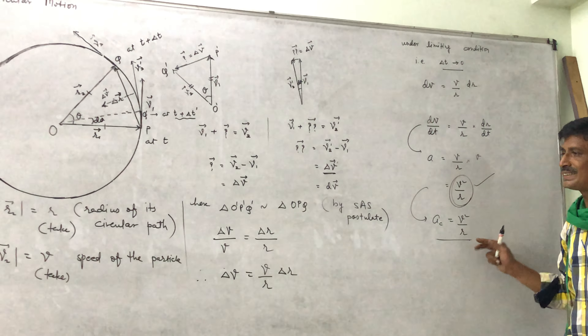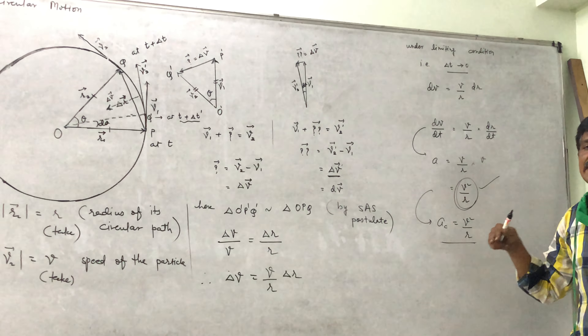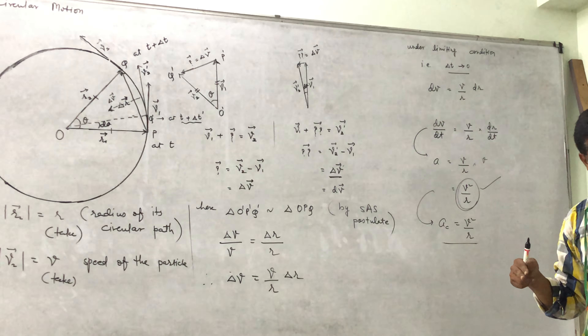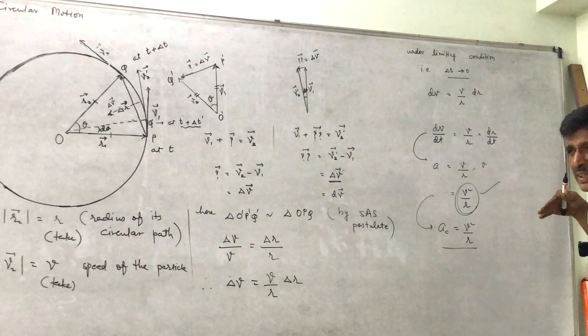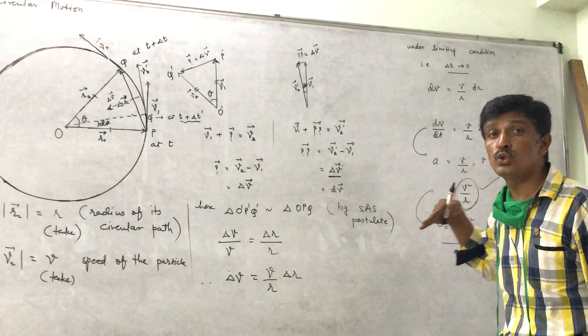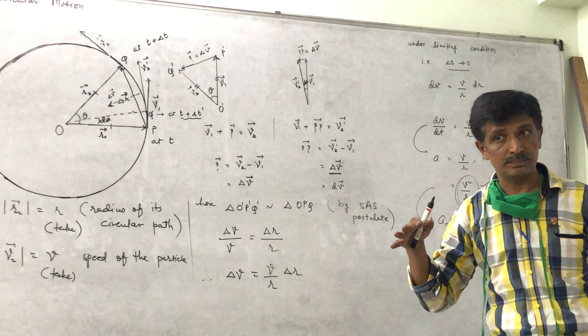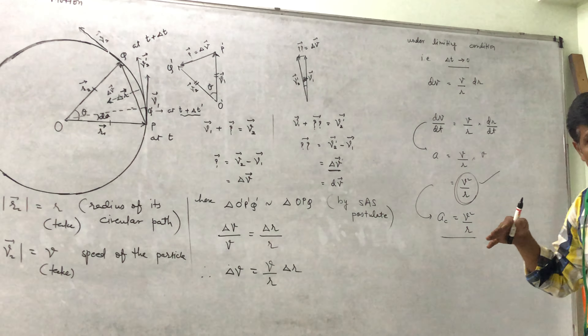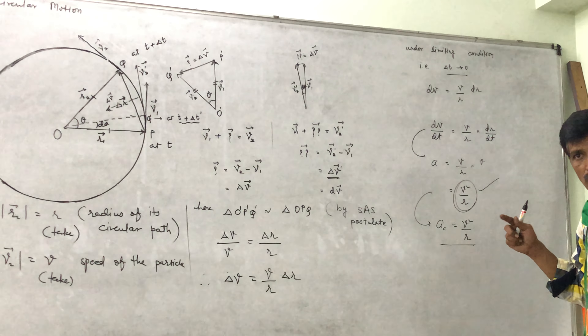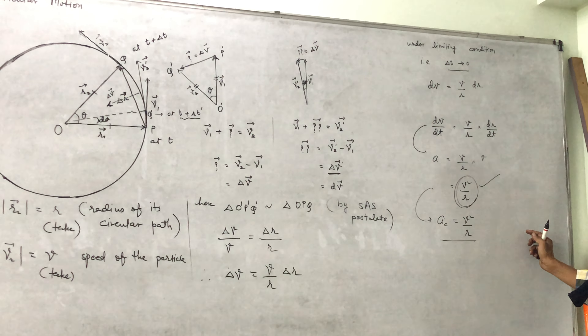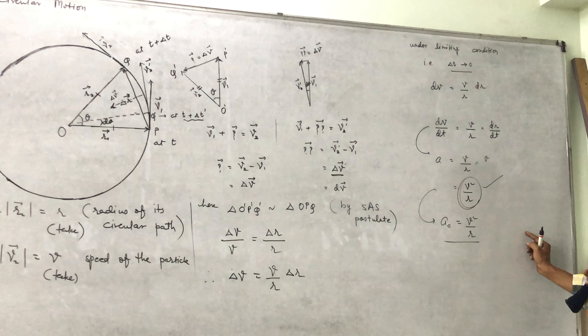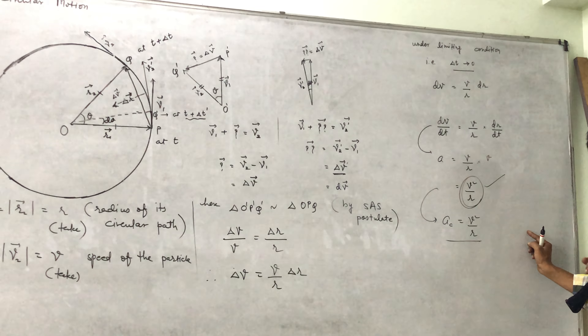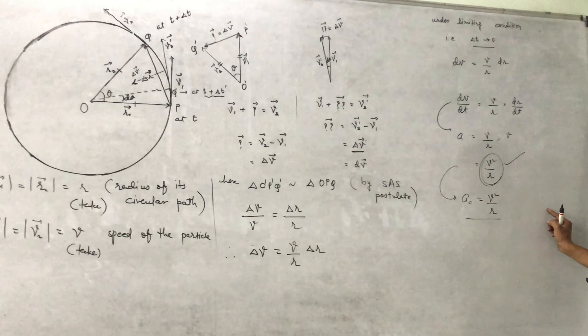This acceleration is called centre-seeking acceleration, or centripetal acceleration, because it always remains directed towards the centre when a particle is performing uniform circular motion.